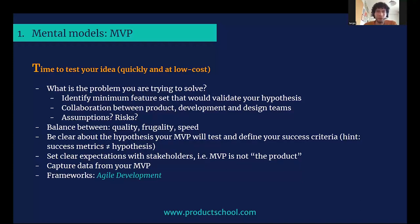You need to capture data from your MVP, both quantitatively and qualitatively, to validate that hypothesis. There are frameworks for moving fast and iterating — Agile development is one of them. But the main idea in the MVP is to figure out what's the minimum feature set that will validate your hypothesis, how you're going to measure it, and go build it.